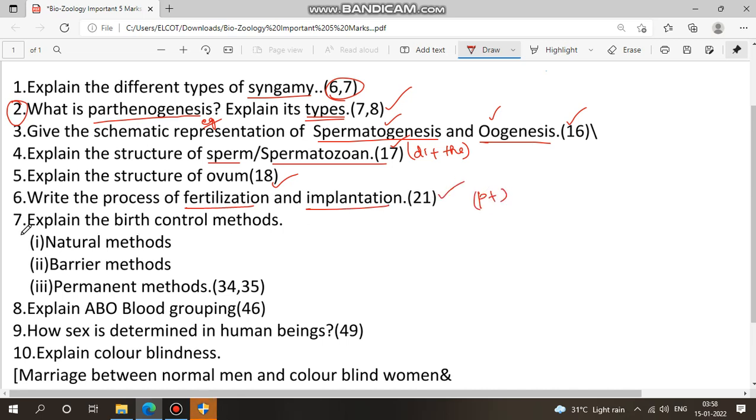Seventh question: explain birth control methods. So this is the pattern, natural method, barrier method, other 5 marks. For 5 marks, permanent method, most probably 3 marks. Key points you will learn: natural method, barrier method, permanent method. Very important question.